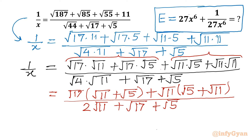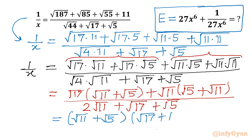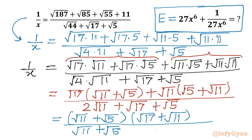Now you can see root 11 plus root 5 bracket is common, so let's take it common. I will be writing here (root 11 plus root 5), second bracket is (root 17 plus root 11). For the denominator, I will write 2 root 11 as root 11 plus root 11, then writing root 11 plus root 5 and root 17 plus root 11. And this is our 1 over x.